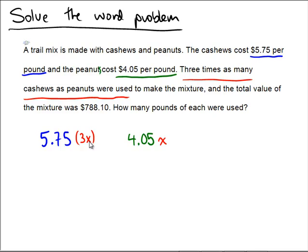So now we do know the poundage. We have 3x in the cashew pile and x in the peanut pile. What do we get when we add together all of this value? Well, according to the problem, we get a total amount of money of $788.10.